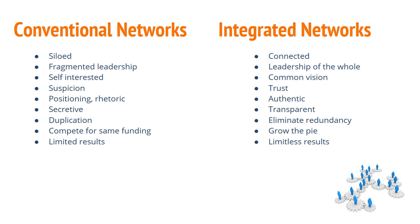Conventional networks tend to be highly siloed. They have some level of connectivity between stakeholder groups, but it's usually far from complete, and that often results in groups with similar worldviews aligning with each other and opposing those with different worldviews. Integrated networks, by contrast, are connected throughout. The primary reason for siloing in conventional networks is fragmented leadership — there is generally no leadership of the whole, which does exist in integrated networks.